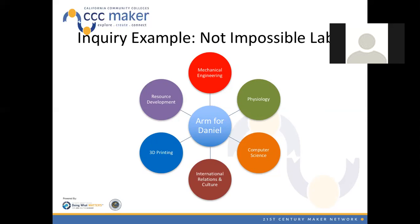If you think about the inquiry — building a prosthetic arm for Daniel, the boy in Sudan — what does it take to build a prosthetic arm using a 3D printer? Looking through the different areas one would need to tap into, it's really across many disciplines: mechanical engineering, physiology, computer science, international relations and culture, 3D printing, and resource development such as grants or donations. We started with the inquiry and the different disciplines emerged from that inquiry.